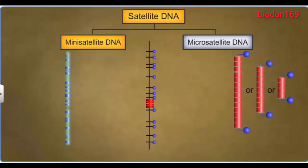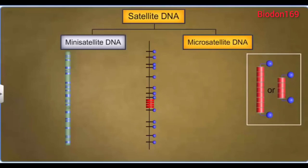On the other hand, micro-satellite DNA is a section of DNA which has tandem repeats of shorter sequences of 2 to 10 base pairs.